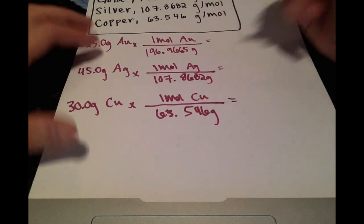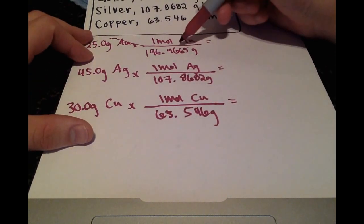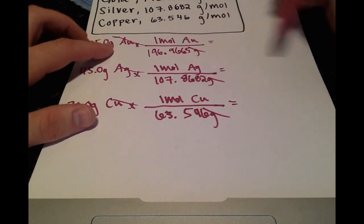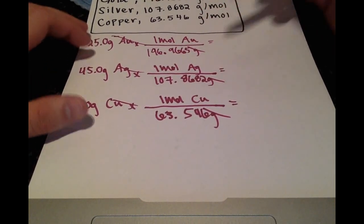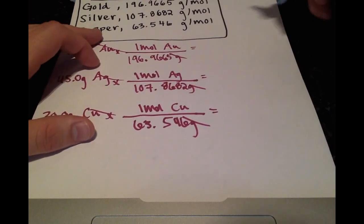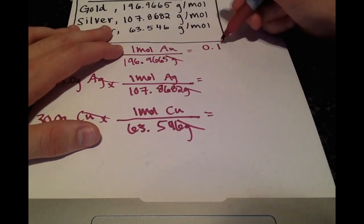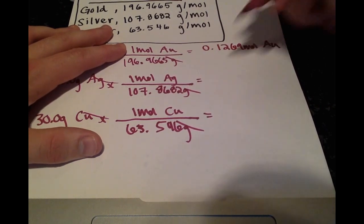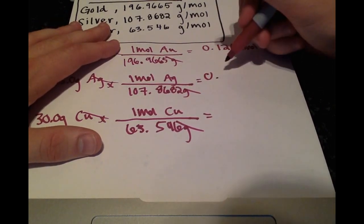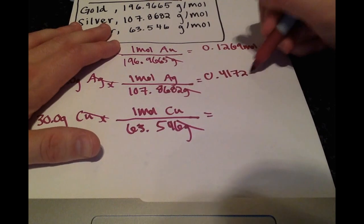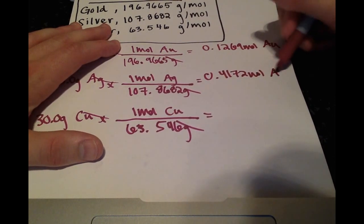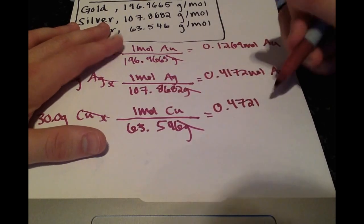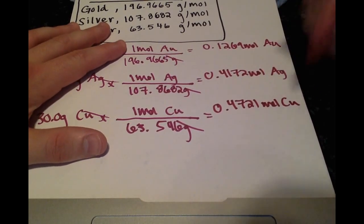Okay, so multiplying all these out and canceling each of the grams component, we'll get all of the components in moles now. So doing that calculation, we get 0.1269 moles of gold, 0.4172 moles of silver, and lastly, 0.4721 moles of copper.